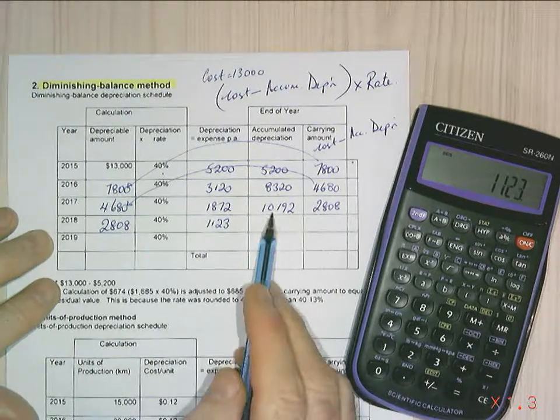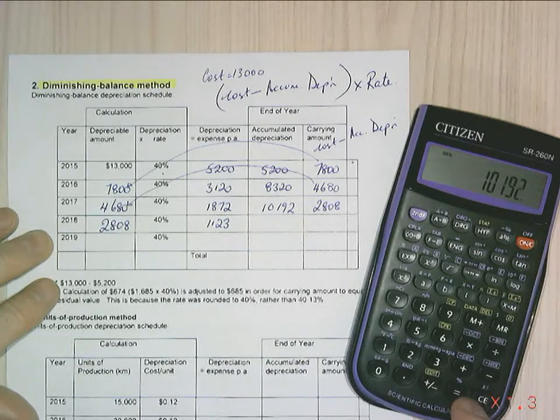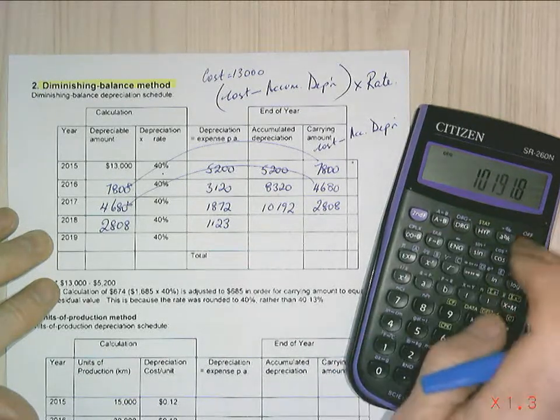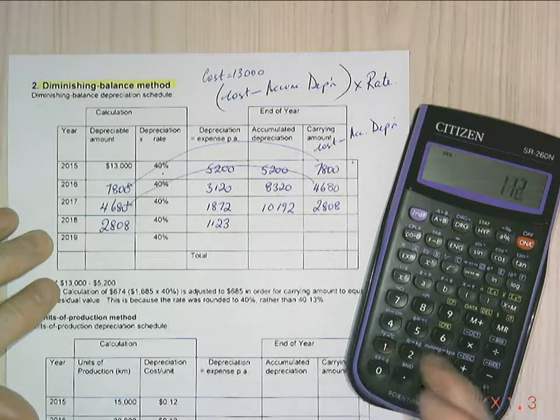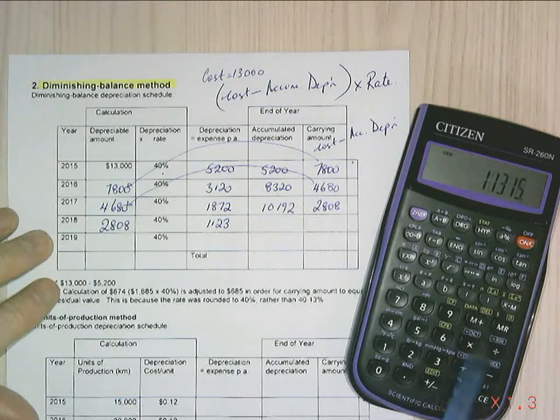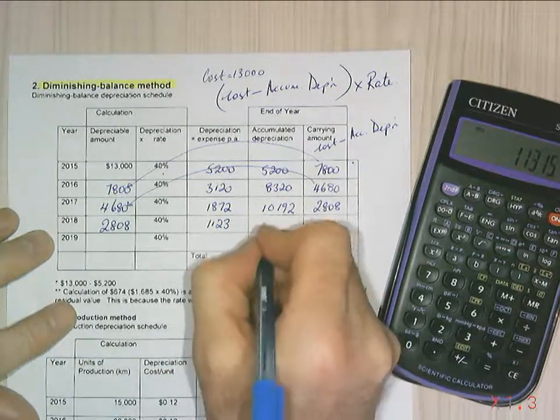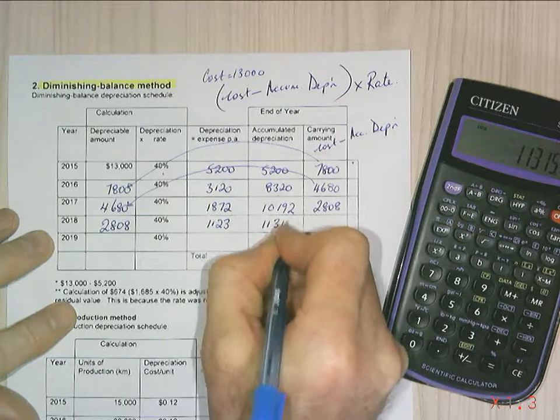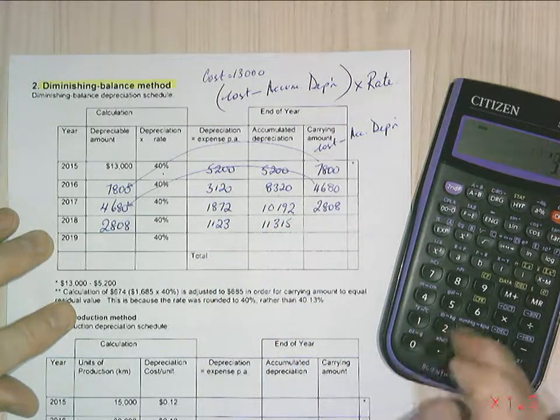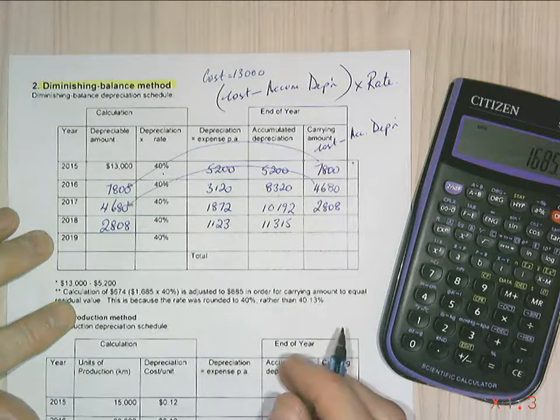I'm going to add that to my depreciation. $1,123 plus $10,192 equals $11,315. $13,000 minus $11,315 gives me $1,685.